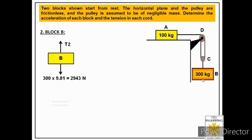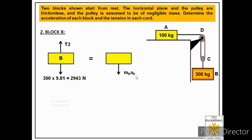In the free body of block B there are only two forces: the weight of 2943 N acting downward, and tension T2 acting upward. We know block B is moving downward, so this system of forces produces a downward acceleration aB. Applying Newton's second law: ΣF = mB·aB.